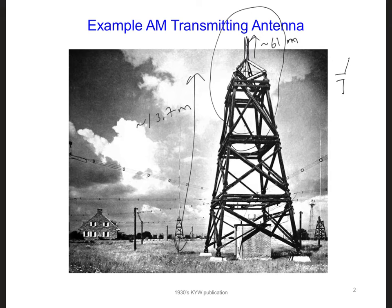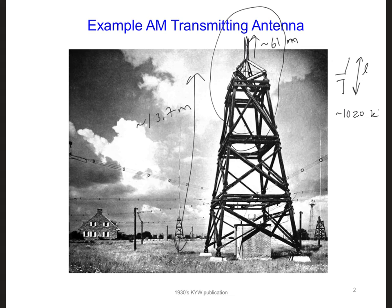Can we approximate this antenna as a dipole antenna? The radiation pattern of an antenna is determined partially by its length. So another question is, how long is this antenna compared to a wavelength? The exact transmitting frequency of this particular antenna station was initially 1,020 kHz.